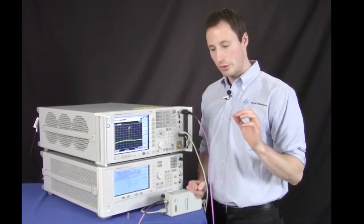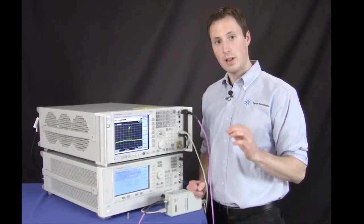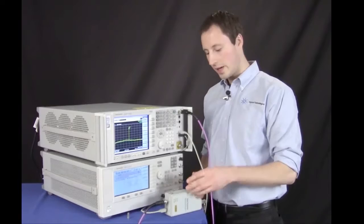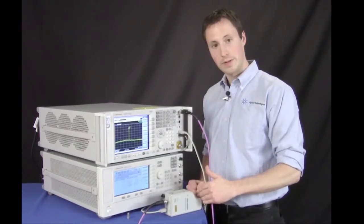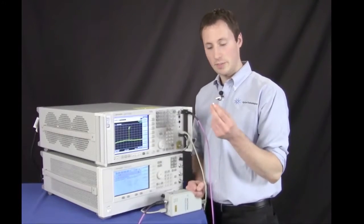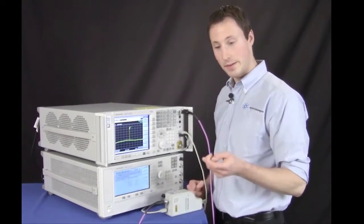Now what I want to show you is how the power level of the LO is automatically compensated for any loss in that LO cable and in the path to the waveguide entrance. To do this I'm going to take a 3dB attenuator and stick it in the path of the LO.